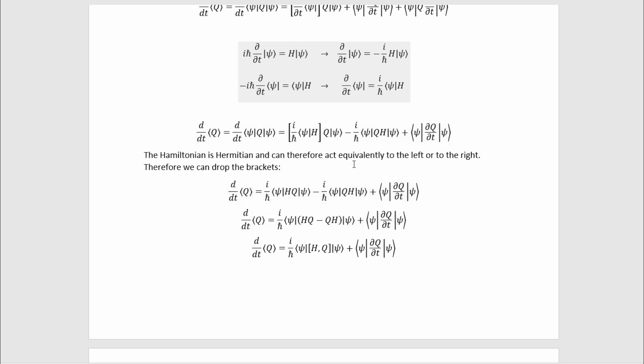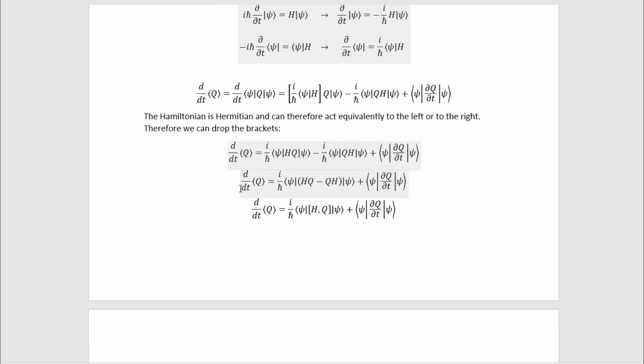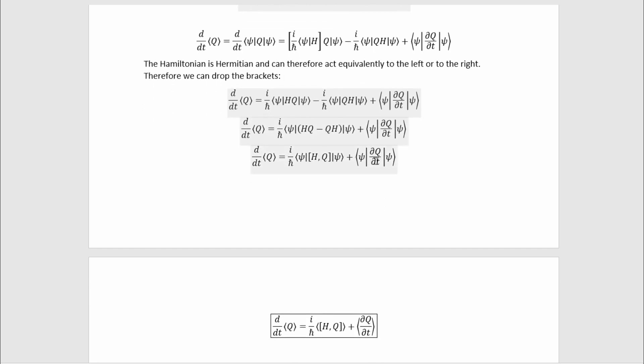Now the Hamiltonian is Hermitian, so it can act to the left or the right equivalently, so we can actually drop this bracket here and get to this. Then we can factor out those states, which gets us here, and then we can recognize the commutator that's showing up, and we get to here.